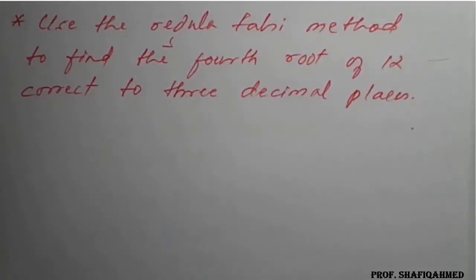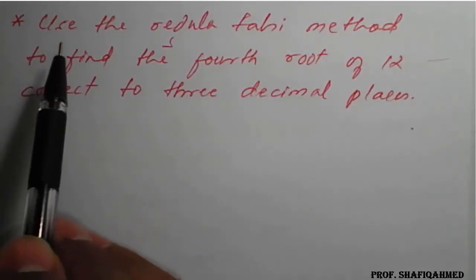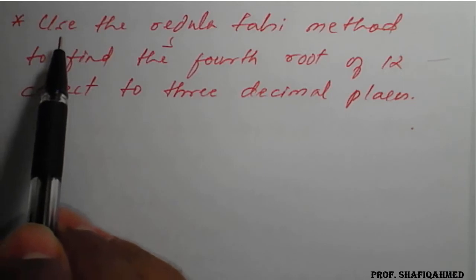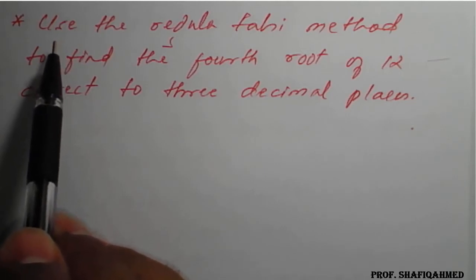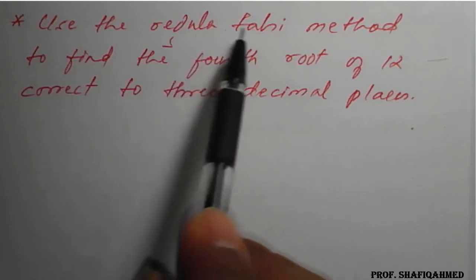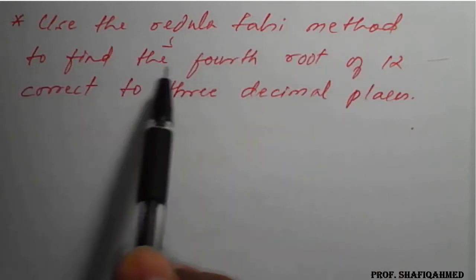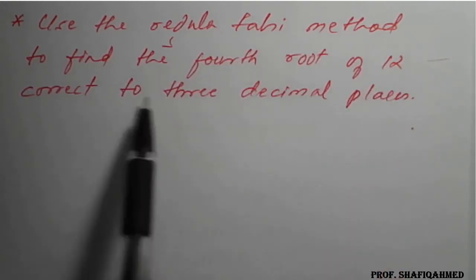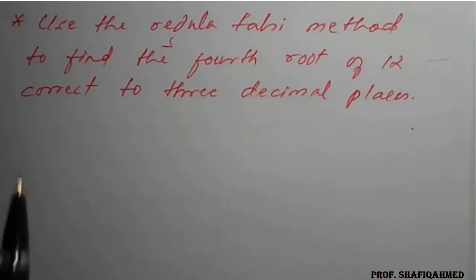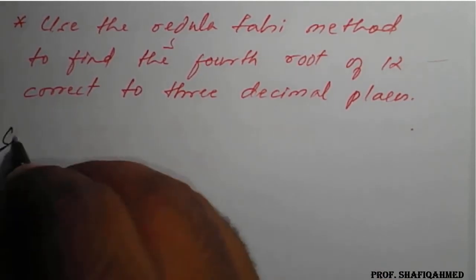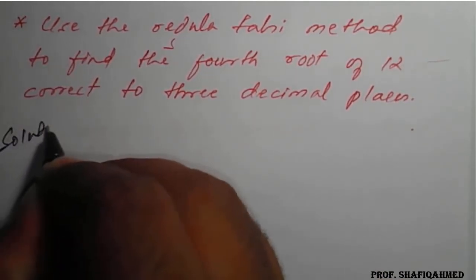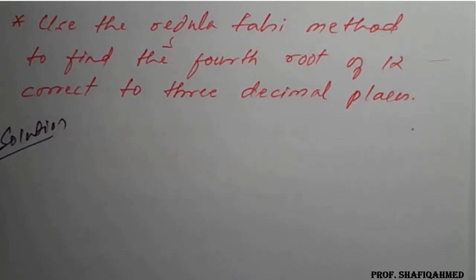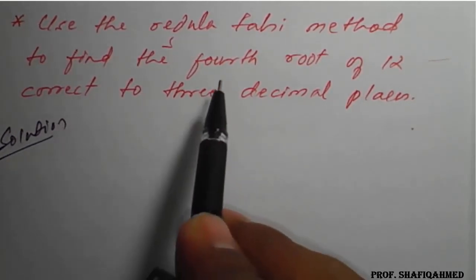Hello students. In this lecture we will see the problem based on the regula falsi method. The problem is: use the regula falsi method to find the fourth root of 12 correct to 3 decimal places. This is one of the important kinds of examples in the regula falsi method.